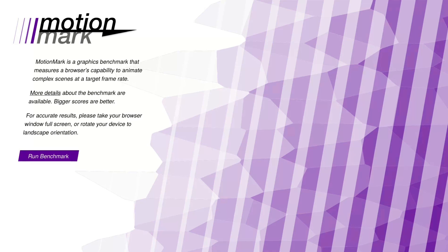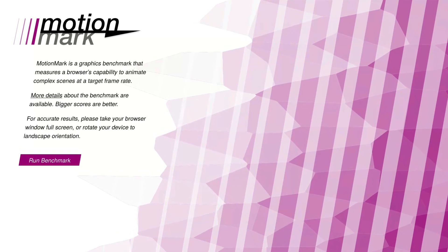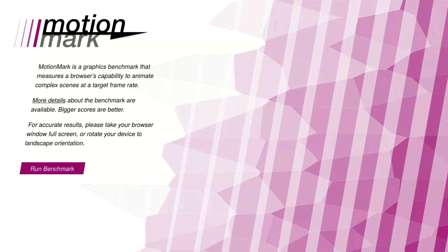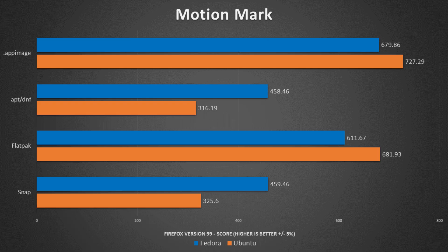From there we ran MotionMark, which specifically focuses on graphic rendering — higher scores are better. Overall we saw very similar results. In this case, Ubuntu actually had an edge with AppImages generally performing better than Flatpaks. And then the native package installation through APT or DNF was slightly behind the Snap package performance.